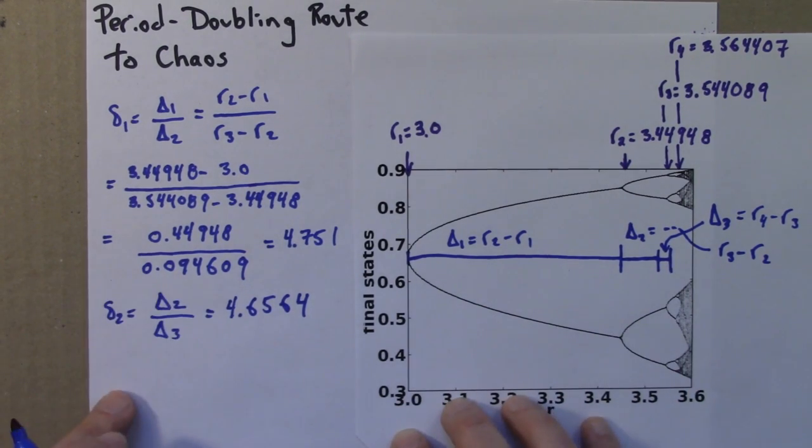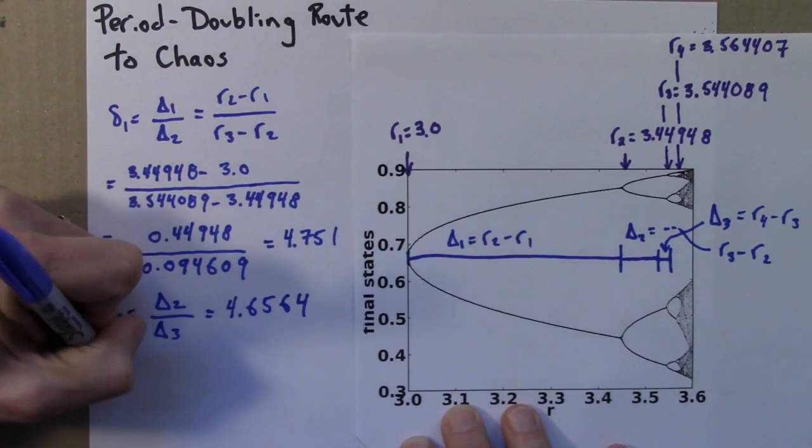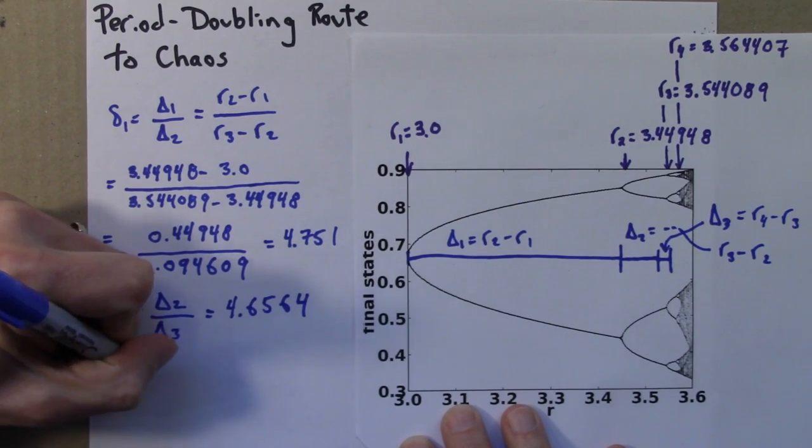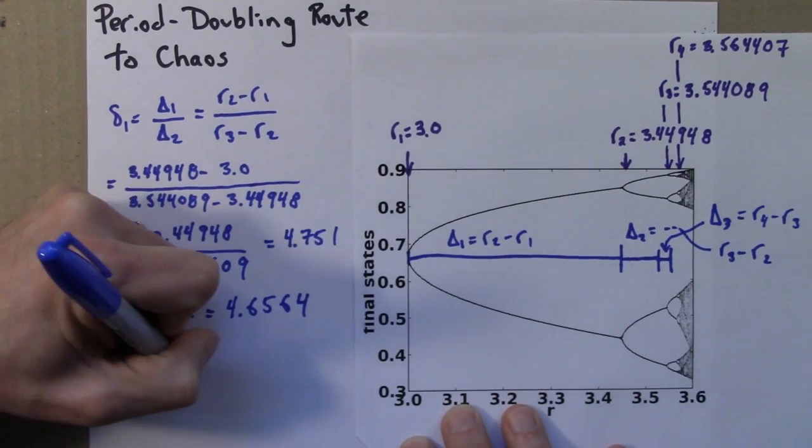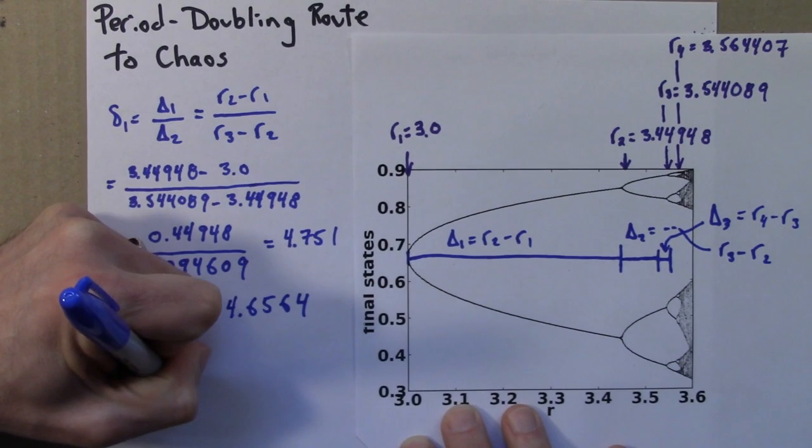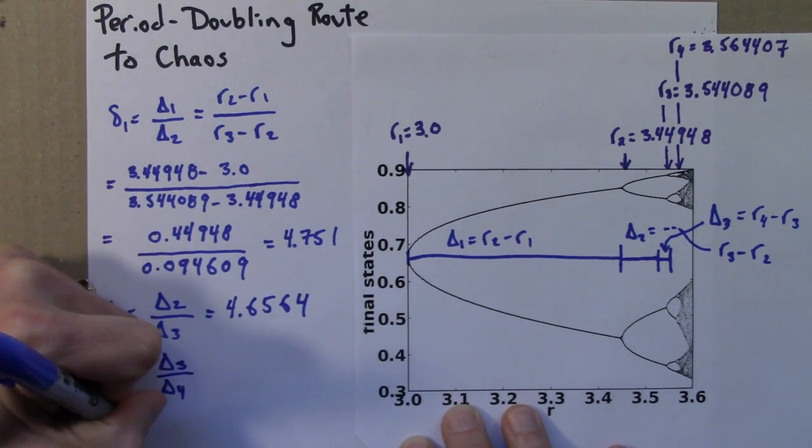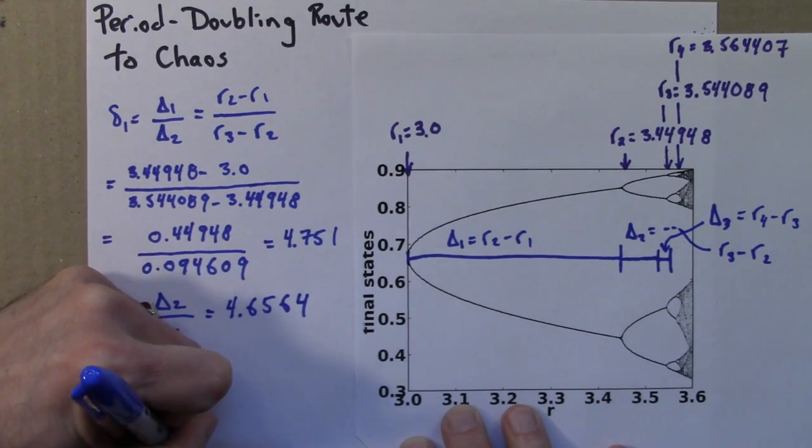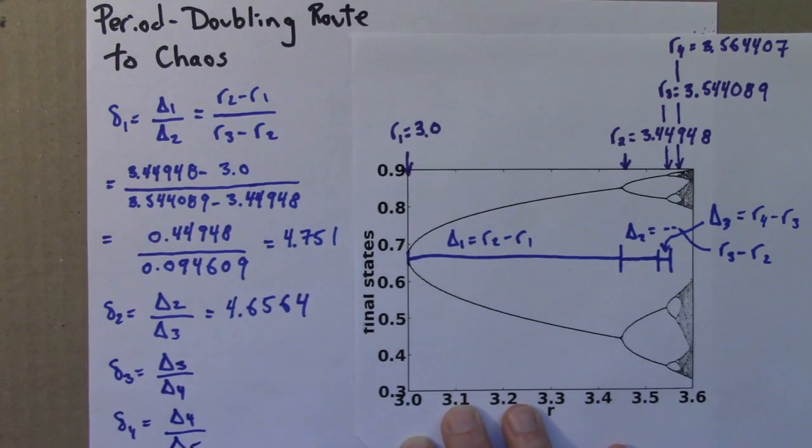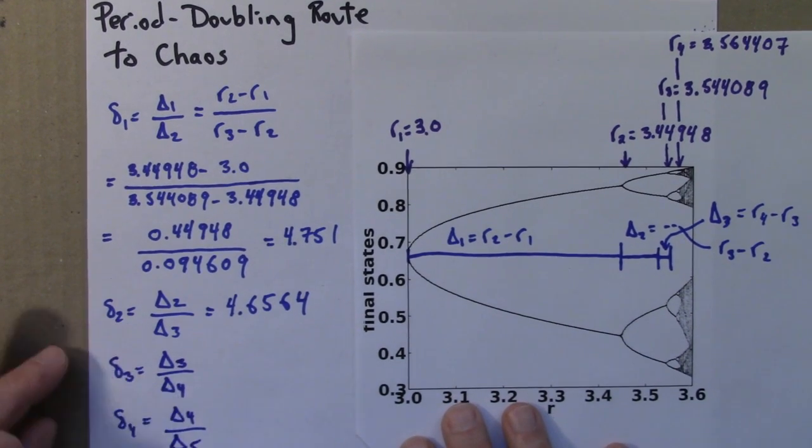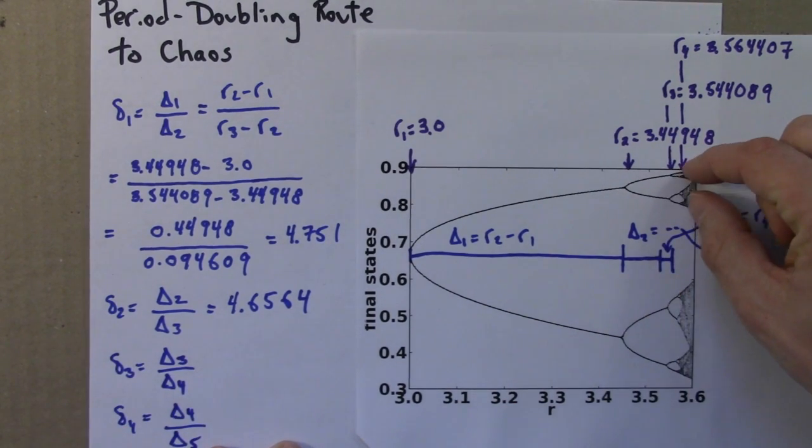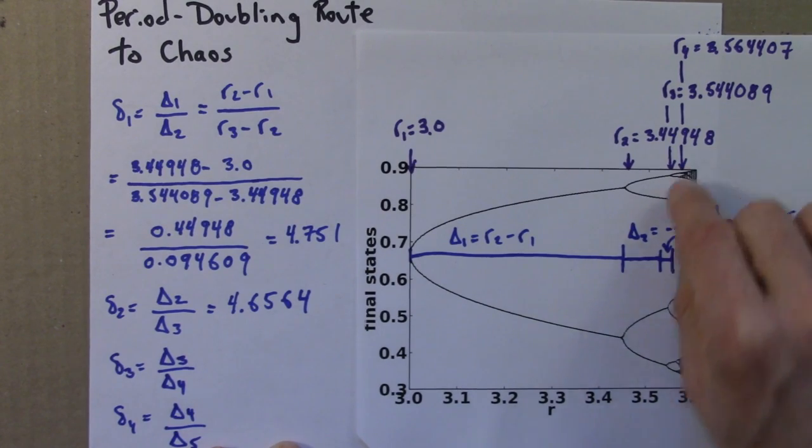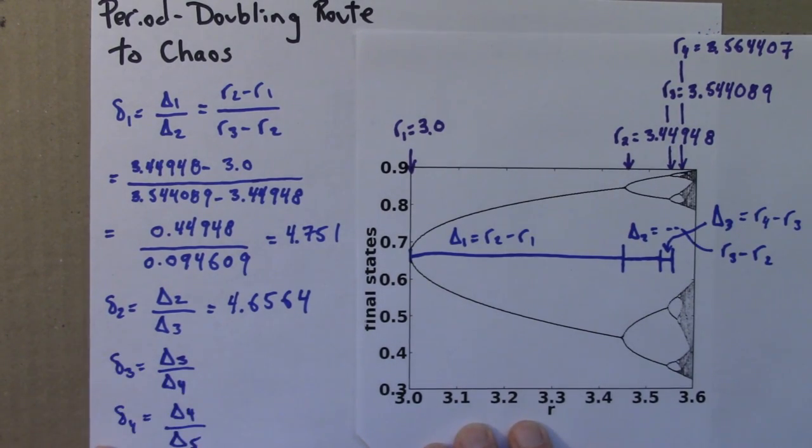And we could keep doing this. We could look at delta 3 over delta 4, delta 4 over delta 5, and so on. And we can ask ourselves, what happens? We can try to do an experiment. What happens as I go deeper and deeper into this transition. The periods double more and more. What happens to this ratio?